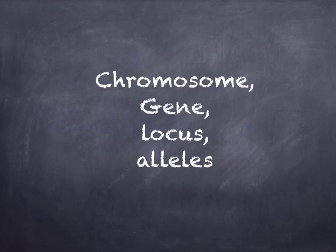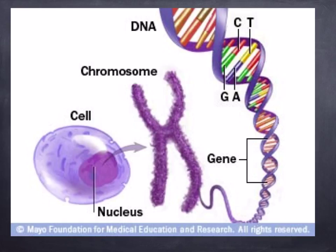Moving on to chromosome, gene, locus, and allele. A chromosome is a structure made up of DNA and histones, and it's found in the nucleus of a eukaryotic cell. The gene is a length of DNA that determines a single characteristic of an organism — for example, eye color. As you can see in this diagram, the gene is a small section of the chromosome.